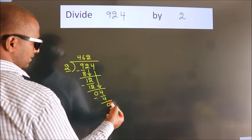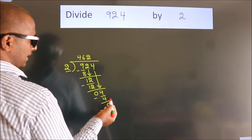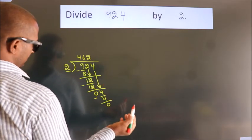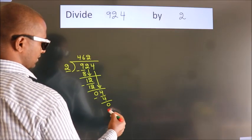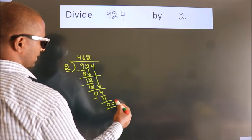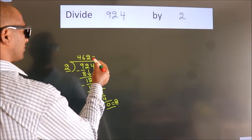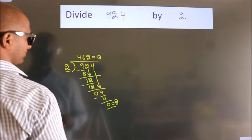After this, no more numbers to bring down, so we stop here. This is our remainder. This is our quotient.